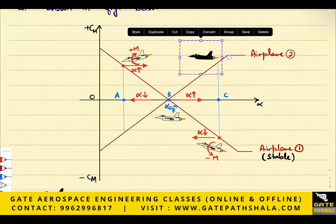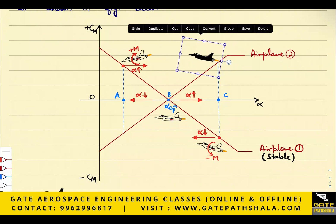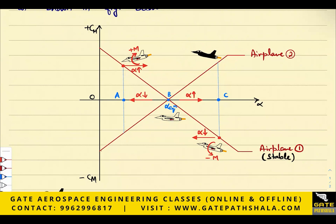Now we are analyzing airplane two. Due to some gust, the angle of attack is increased. For airplane two with the increased angle of attack, it is creating a positive pitching moment about the CG. What does a positive pitching moment do when the angle of attack is already high? The angle of attack will further increase, and it will take the airplane away from equilibrium — it is not coming towards the equilibrium position.